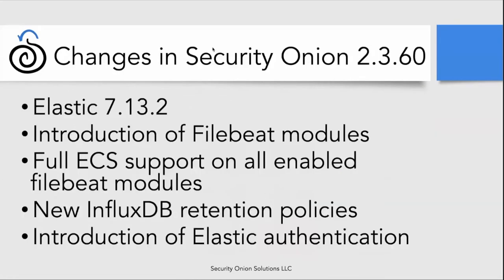In Security Onion 2.3.60, we made a lot of big changes, including the latest and greatest version of the Elastic Stack, version 7.13.2. We are supporting FileBeat modules by default, and we're including Elastic Common Schema support on some of those FileBeat modules. We'll also talk about InfluxDB retention policies and the introduction of Elastic authentication. To cover the first few bullet points, I'll turn it over to our product manager, Mike Reeves.